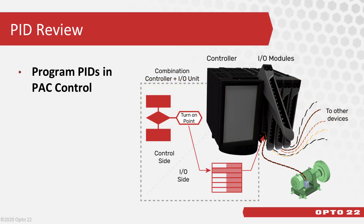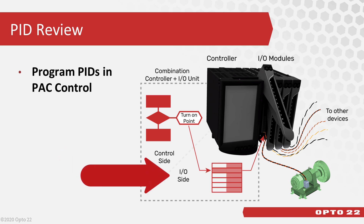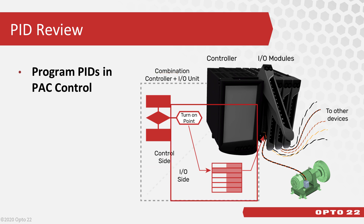In review, the Groove Epic and SnapPak R controllers are actually made up of two processors — one for the controller side and the other for the IO unit side. When you create your strategy, you download it to the controller side, and when commands for IO points are executed, they're handled by the IO processor.